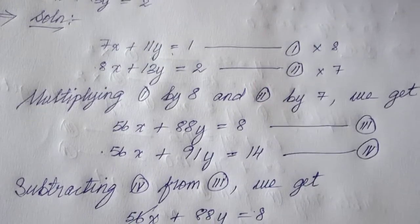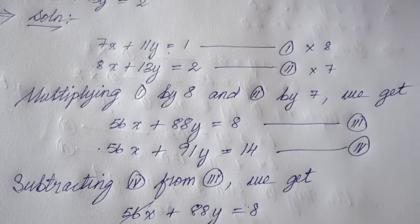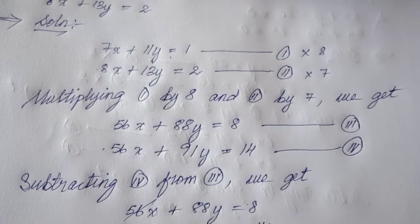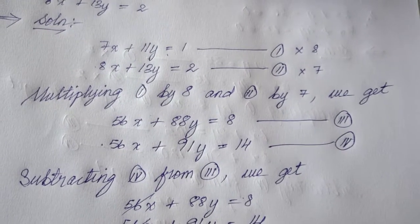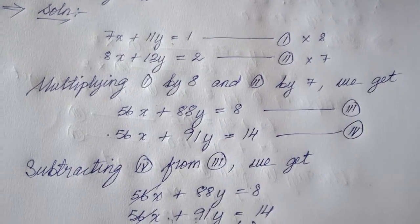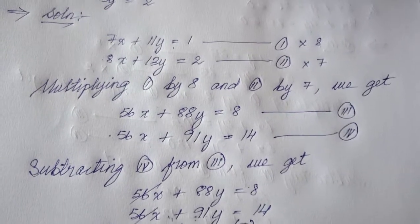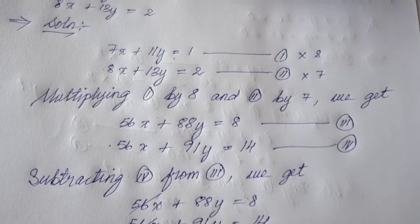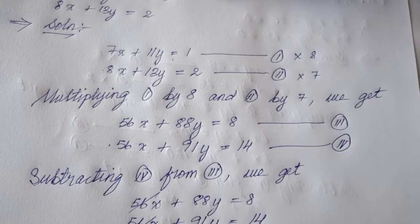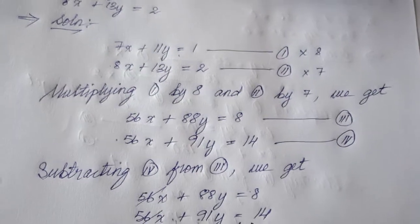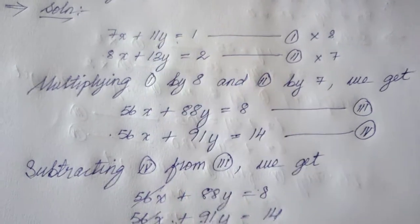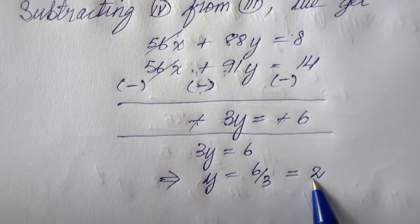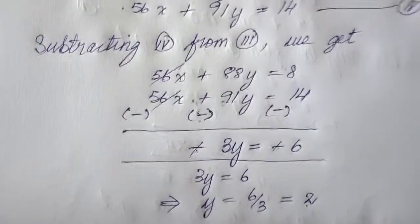I need to choose the simplest equation. Equation 1 is 7x plus 11y equal to 1; equation 2 is 8x plus 13y equal to 2; equation 3 is 56x plus 88y equal to 8; equation 4 is 56x plus 91y equal to 14. Equation 1 is the simplest, so I will substitute y equal to 2 into equation 1.